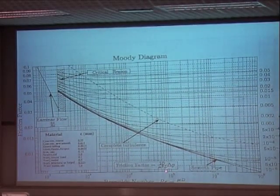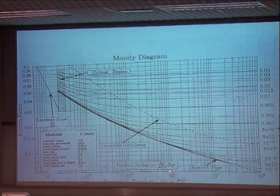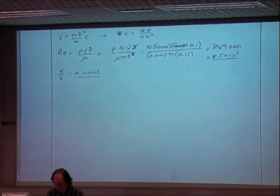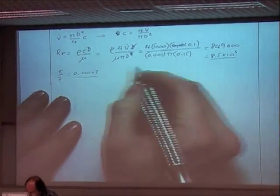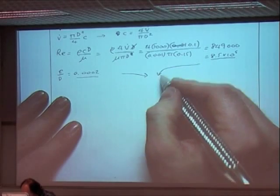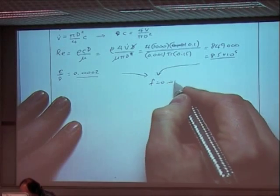So 8.5 times 10 to the 5, which, as we said, is between these two lines. And we had a relative roughness of 2 times 10 to the minus 4. And so you read along this line until you get to that Reynolds number. And then once you're at that point, you read across to this axis and you get your friction factor. So my friction factor determined from both of those values, the friction factor is 0.015.